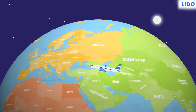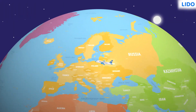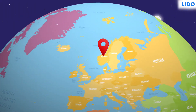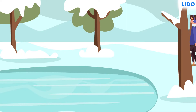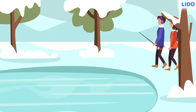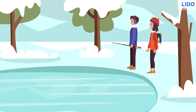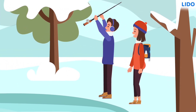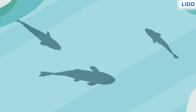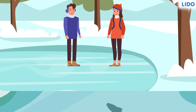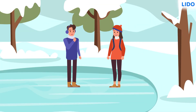Ratul and Priya went on a holiday in Norway. On a chilling morning, they went to a frozen lake for ice fishing. Ratul was mesmerized to see that despite the frozen surface, fish were still swimming inside the lake. He looked at Priya with amazement and curiosity.